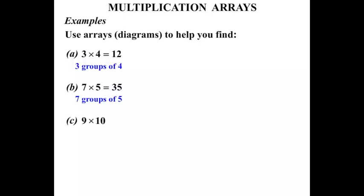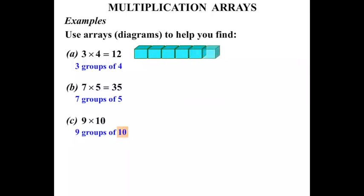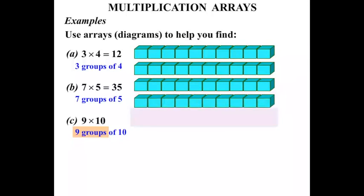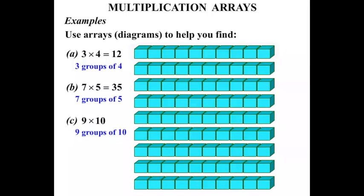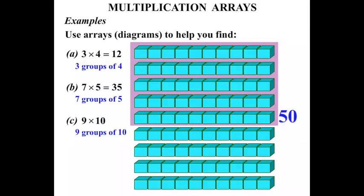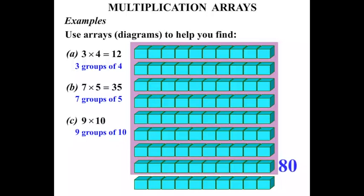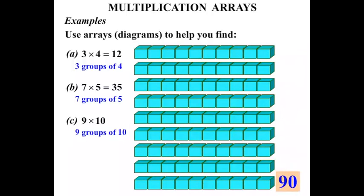Part C: nine times ten — another way of saying that is nine lots of ten, the same as nine groups of ten. So let's think of ten — we'll use ten little cubes this time. One, two, three, four, five, six, seven, eight, nine, ten. There's our one group, and we want nine groups. So we've got one, two, three, four, five, six, seven, eight, nine groups of ten. Let's count them: ten, twenty, thirty, forty, fifty, sixty, seventy, eighty, ninety. So nine times ten, or nine lots of ten, equals ninety.